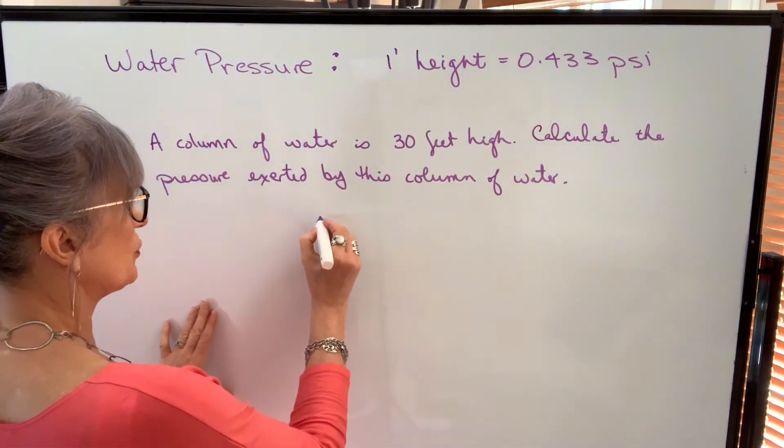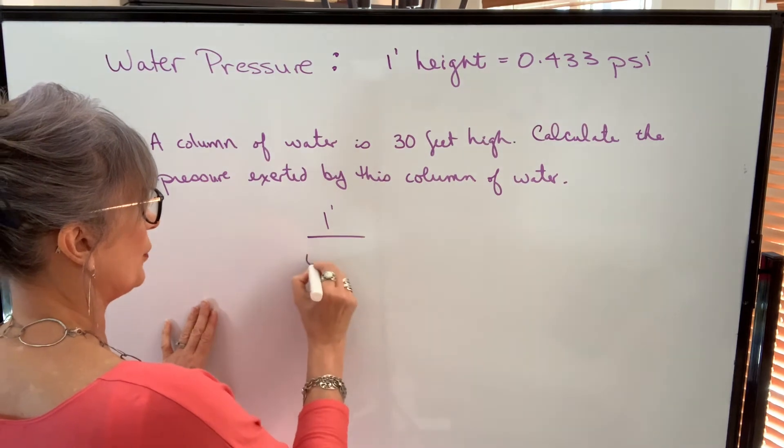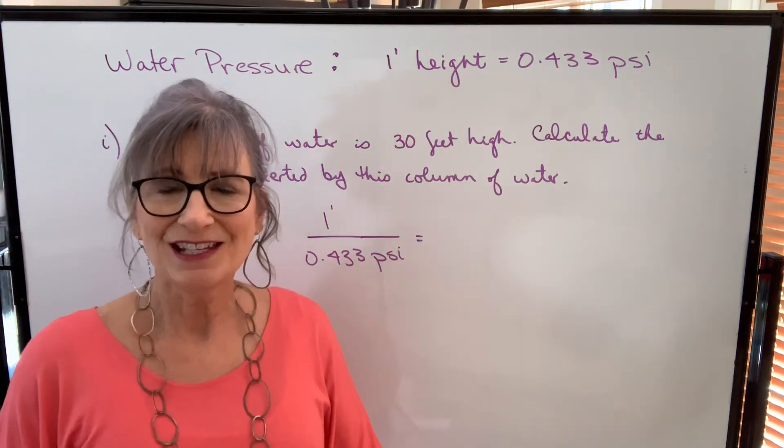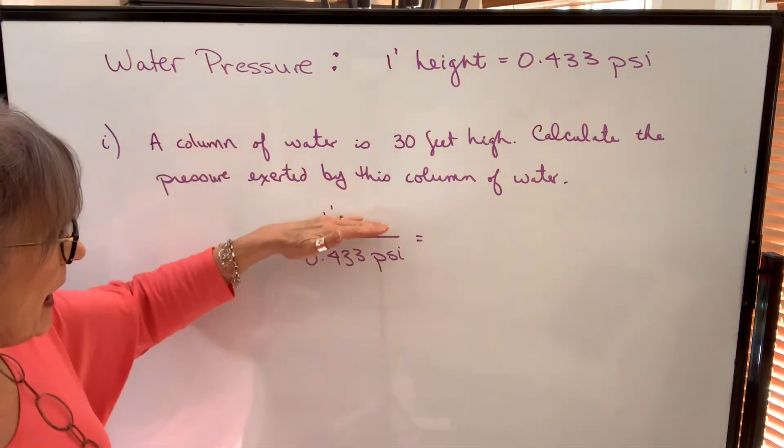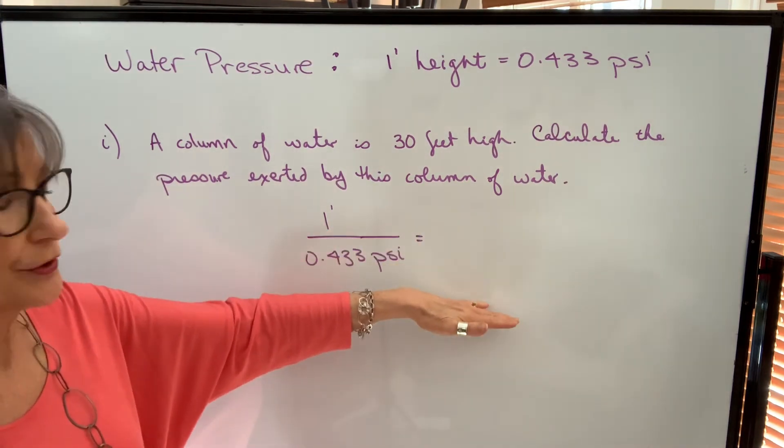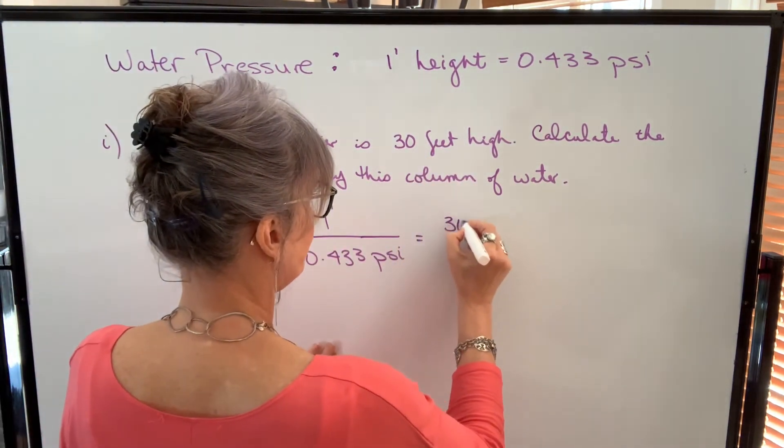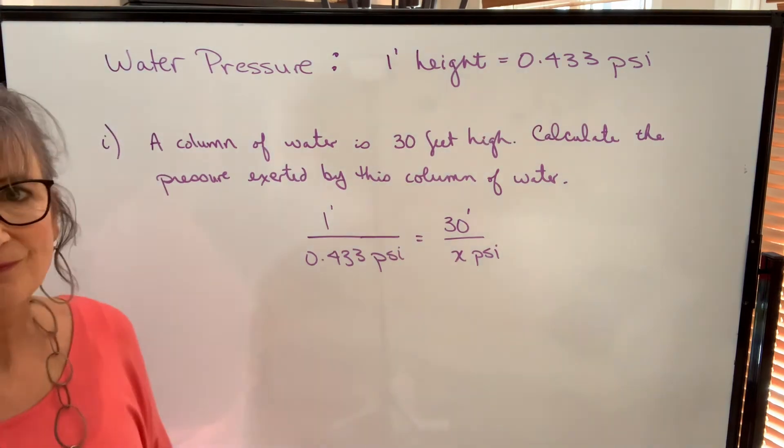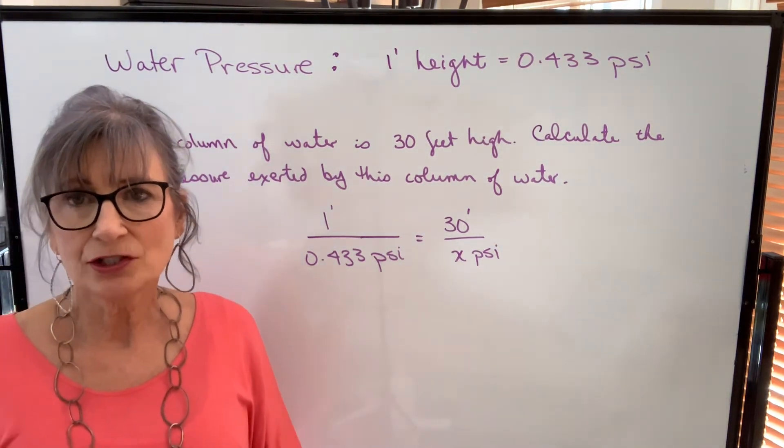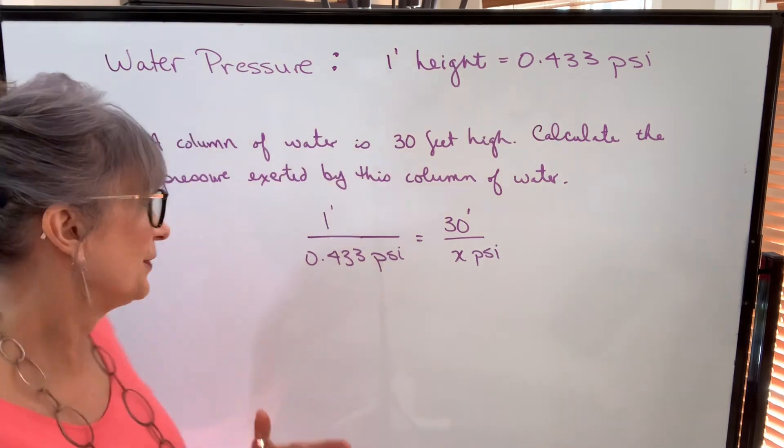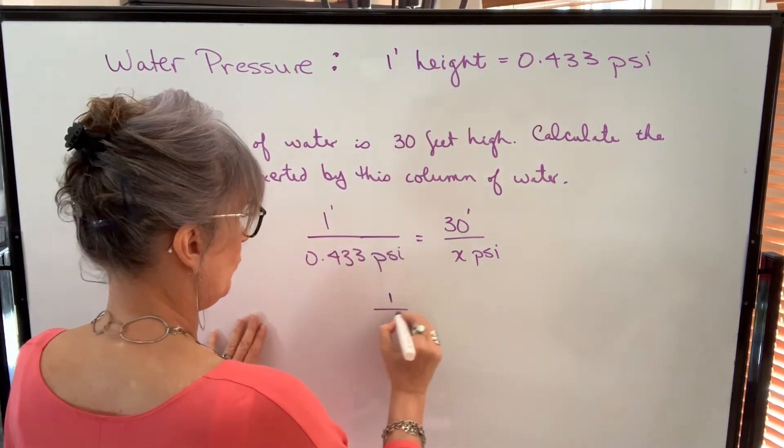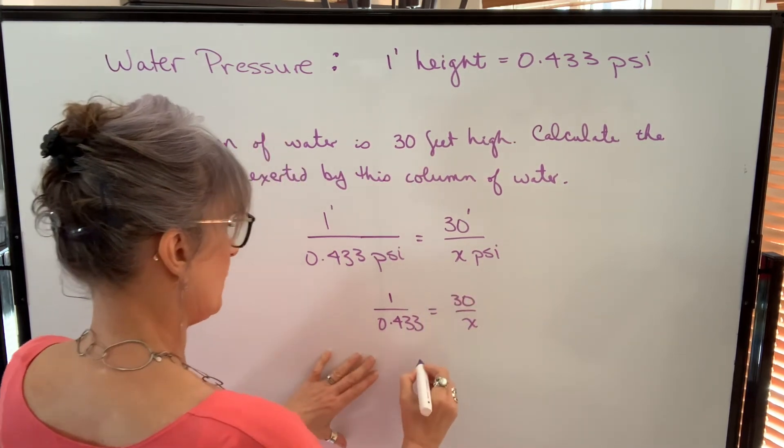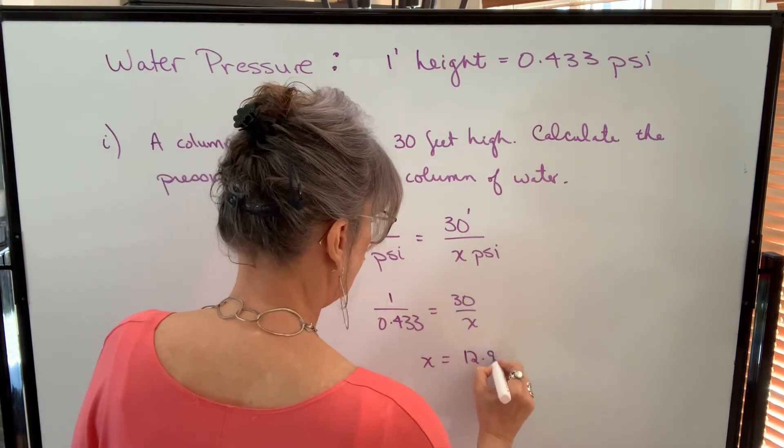So the way I'm going to set up my direct proportion, I'm going to put the height over the pressure. You can put your values in any order. The key is putting them in the same order on the other side. So if I go height over pressure, I need to put height over pressure on the right side. So I've got 30 feet and I want to know how many psi. I put units in initially just to make sure my units are consistent, but you can drop them or write them without. So 1 over 0.433 will equal 30 over x. We cross multiply and we get 12.99 psi.